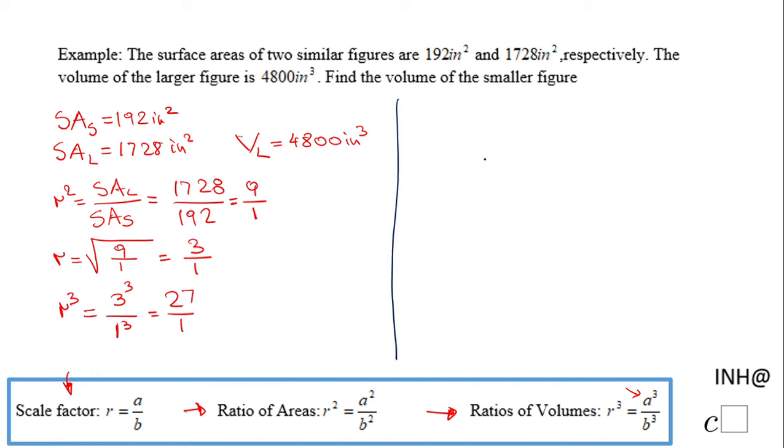Once we have this ratio of the volume, we can move and find the volume of the smaller figure. Because this r cubed is also the quotient, the ratio of the volume of the larger figure over the volume of the smaller figure. So we have here 27 over 1, which is r cubed, equals the volume of the larger figure, 4800, over the volume of the smaller figure.